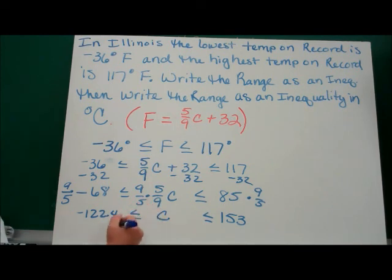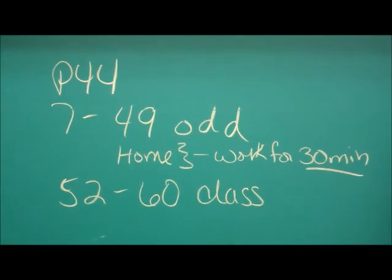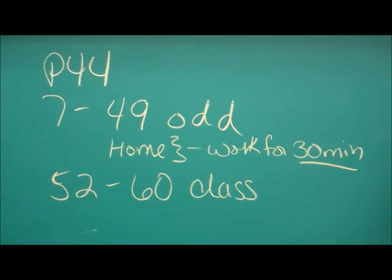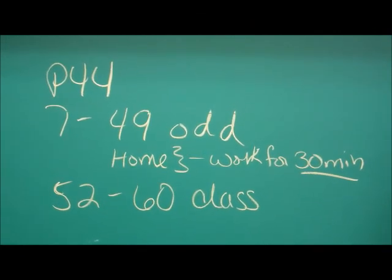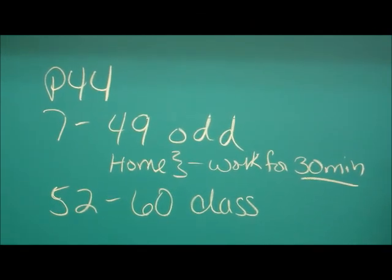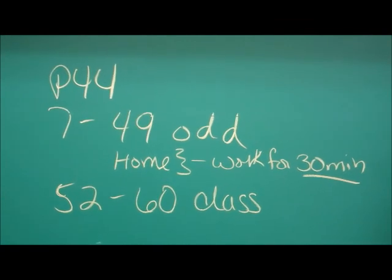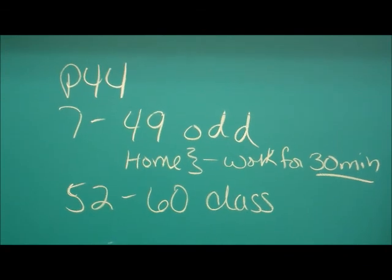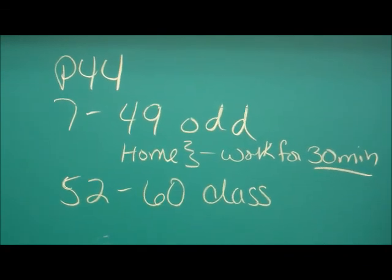For homework, I want you to do page 44, problems 7 through 49, the odds. Try to do these at home — work on it for about 30 minutes but no more than that. What you don't get done, come into class and give it an honest 30 minutes. In class, I want you to do 52 to 60.